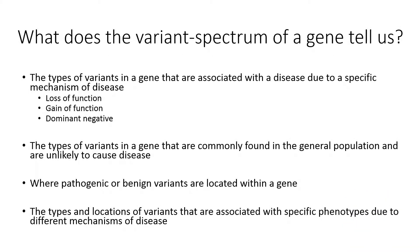Understanding the variant spectrum of a gene is an important step in variant interpretation. It allows us to become acquainted with the types of genetic variants that are known to cause a disease within a specific gene, and what the mechanism of disease is — in other words, why a variant causes a disease. We can also learn if there are variant types that are often seen in the general population in presumably unaffected individuals, which can indicate that a variant is less likely to cause disease. The location of a variant within a gene can be important to consider.